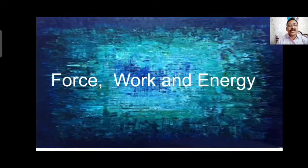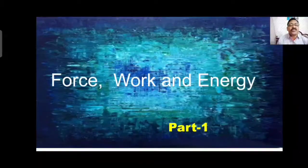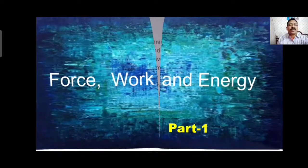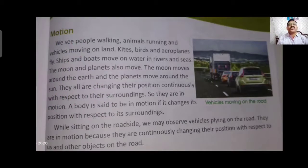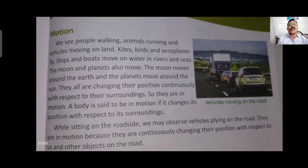Force, Work and Energy. This is the lesson and this is the last lesson for the annual exam course. This is Part 1. Motion. We see people walking, animals running and vehicles moving on land. Kites, birds and aeroplanes fly. Ships and boats move on water, in rivers and seas. The moon and planets also move — the moon moves around the earth and the planets move around the sun. They all are continuously changing their position with respect to their surroundings, so they are in motion. A body is said to be in motion if it changes its position with respect to the surroundings.